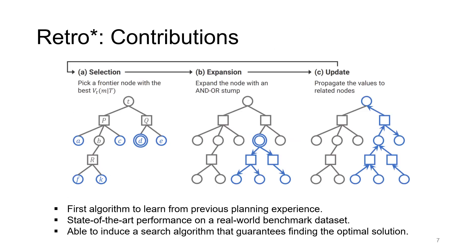To tackle the optimal retrosynthetic planning problem, we propose RetroStar with three main contributions. First, we are the first algorithm to incorporate learning to plan techniques for retrosynthetic planning. Second, RetroStar is able to achieve state-of-the-art performance on a real-world benchmark dataset, outperforming other baselines by a large margin. Third, the algorithm framework proposed is able to induce a search algorithm that guarantees finding the optimal solution.